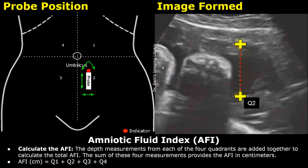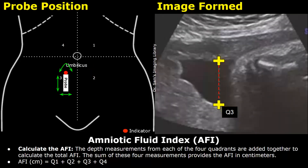Then move to the second quadrant, which is the left lower quadrant. After finding the required amniotic fluid pocket, you can take the measurement in quadrant two. We have now taken two measurements.